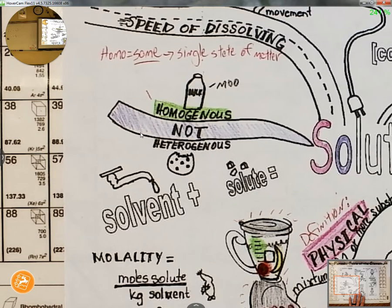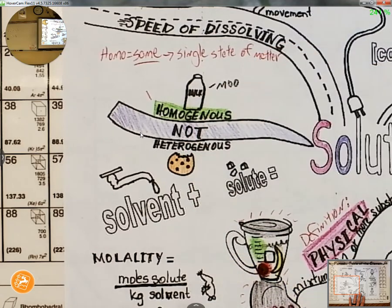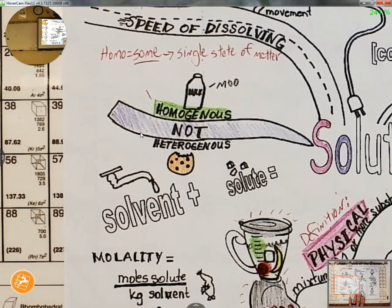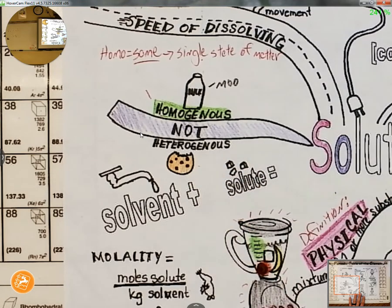Now what about this down here at the bottom — looks like a chocolate chip cookie. When you look at a chocolate chip cookie, can you tell it's a mixture? Yeah, because you can see the chocolate chips. When you've got a mixture and you can tell it's a mixture, then it's heterogeneous. So we're not talking about a heterogeneous mixture — we're talking about a homogeneous mixture. Homogeneous like milk, not heterogeneous like cookies.